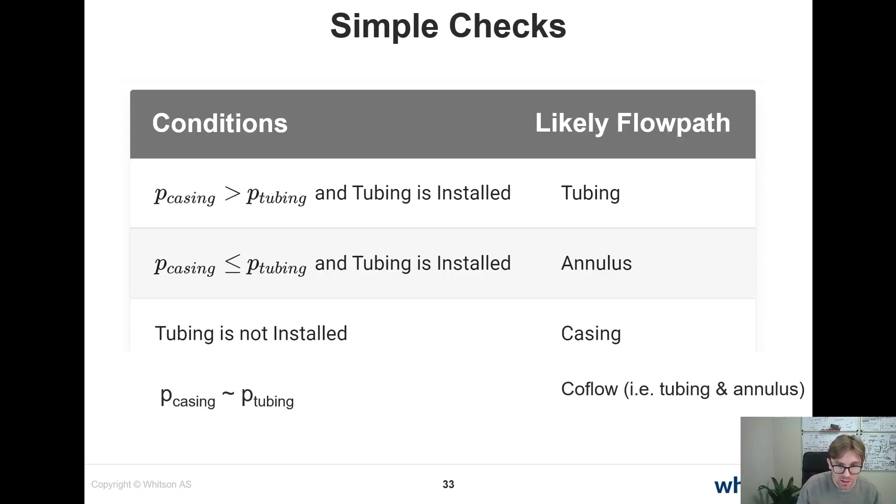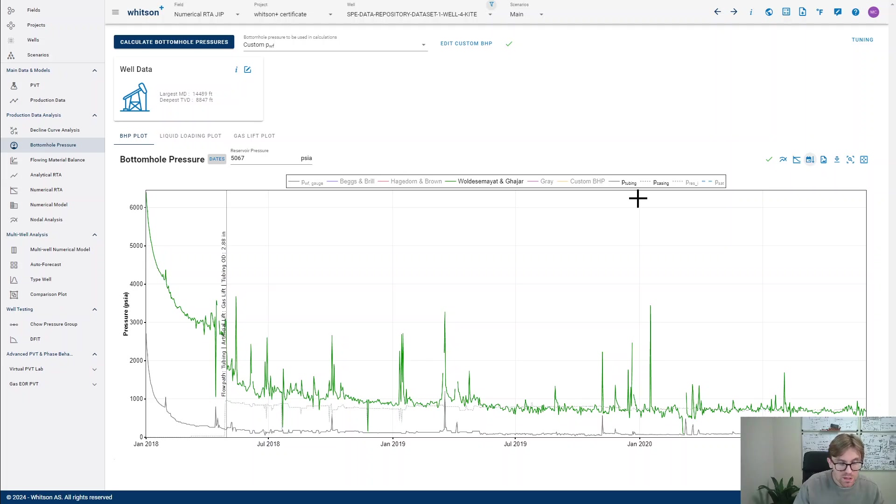Casing is larger than tubing, most likely tubing. Well, if this was flipped, most likely you would do annular gas lift in that particular instance, right here.